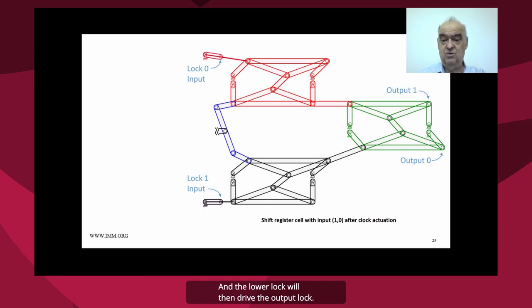And the lower lock will then drive the output lock. So the output lock is now locked and is now holding the data.